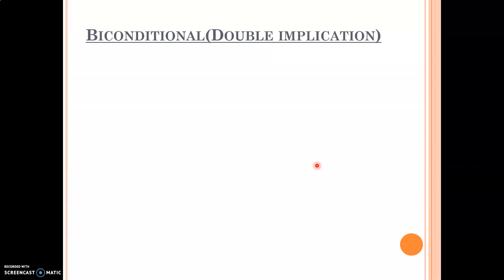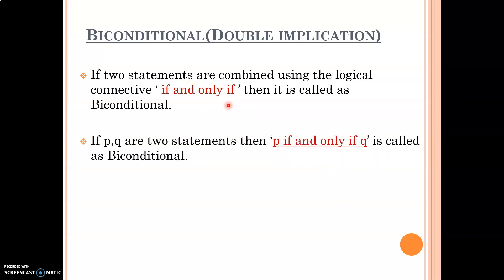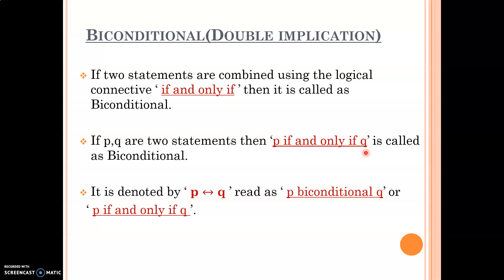Next: biconditional or double implication. If two statements are combined using the logical connective 'if and only if', then it is called a biconditional. The connective word here is 'if and only if'. If P and Q are two statements, then 'P if and only if Q' is called a biconditional. You begin with the first simple statement, apply 'if and only if' in between, then write the second simple statement. It is denoted by P double-arrow Q and read as 'P biconditional Q' or 'P if and only if Q'.